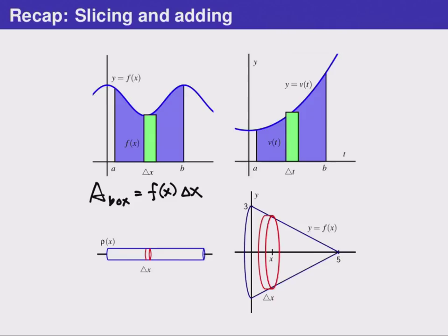Because velocity times time is distance, we were able to calculate the distance traveled by this object along one very thin slice. Again, we used an integral to add up all of these slices and get the net distance.